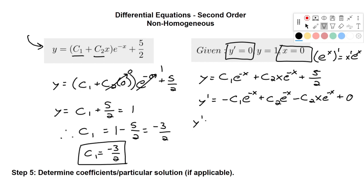Now we'll substitute in x is 0. So this entire term will go to 0. This will go to 1. This will go to 1. And we'll end up with y prime is negative c1 plus c2. And all of that equals 0.